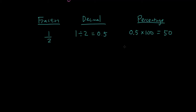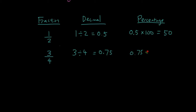So let's try a bit more. Let's try converting 3 fourths — the fraction — to a decimal and then to a percentage. You get the top number divided by the bottom number: 3 divided by 4, and you should get 0.75. Then if you multiply that by 100, you will get 75%. Don't forget the percent sign. So that's how you convert from a fraction to a decimal and a percentage.